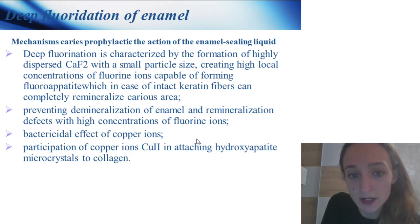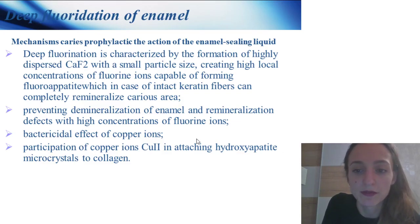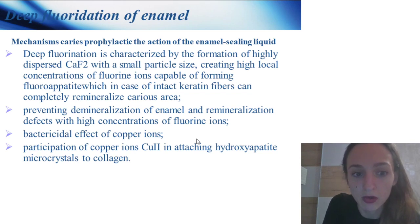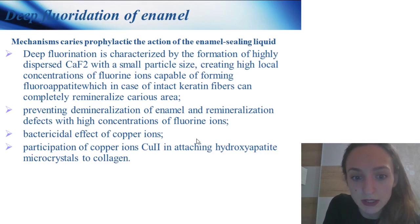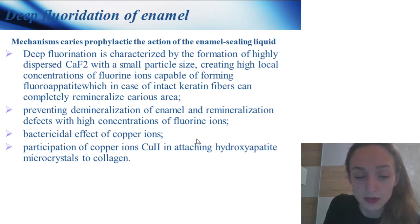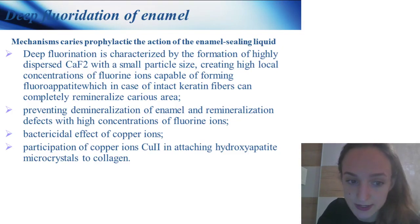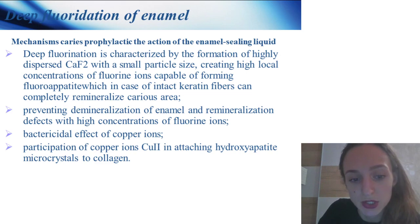Mechanism of action of the enamel sealing liquid: deep fluoridation is characterized by the formation of highly dispersed calcium fluoride with a small particle size, and creating a high local concentration of fluoride ions capable of forming fluorapatite, which in intact enamel can completely remineralize the carious area. It prevents demineralization of enamel, and through mineralization defects with high concentration of fluoride ions produces a bactericidal effect via the participation of copper ions.